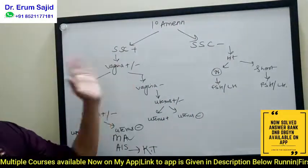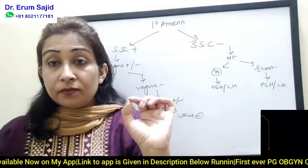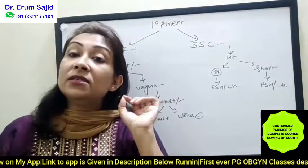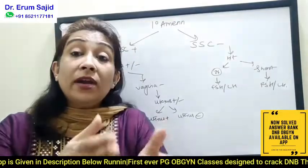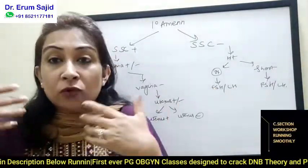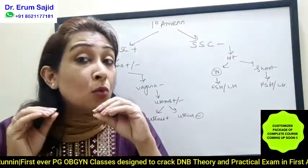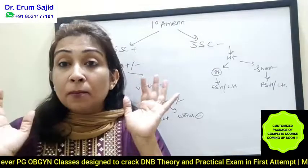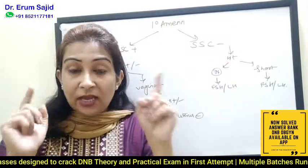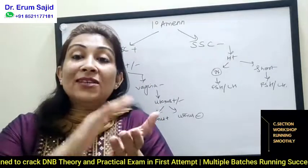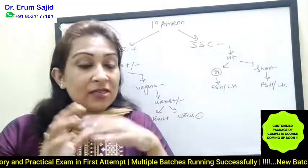Now suppose the patient has secondary sexual characteristics — maybe Tanner stage 2. What does that tell you? Think about it. Secondary sexual characteristic development tells you that estrogen has been present in the body — either currently or in the past, when it did its effect. It might not be present now due to premature ovarian failure or other reasons. But estrogen was already there, meaning most likely the HPO axis was working at some point. Now the question arises about the outlet disorder. Peripheral estrogens were present — maybe converted from androgens — but estrogen was in the body and did its job.